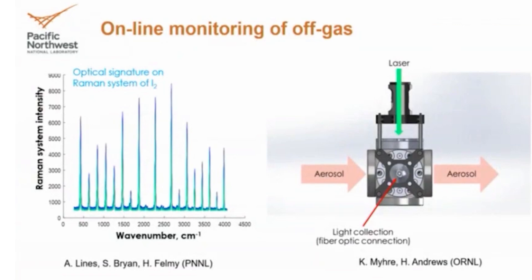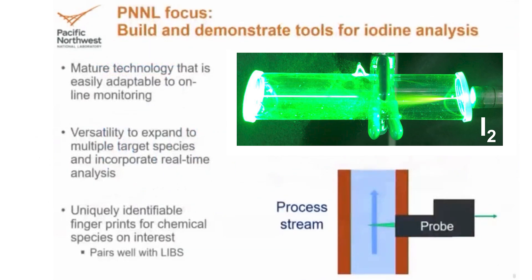I'm going to talk about both of these systems, starting with the PNNL system. Our goal with molecular spectroscopy was to do at least a proof of principle demonstration on iodine, one of many species of interest in the off-gas stream. When we knew we were going after iodine, we said we want to start with Raman spectroscopy. It's all about taking your probe and simply putting it into your gas line, shining a low power laser in there, and looking at how that laser interacts with your sample.